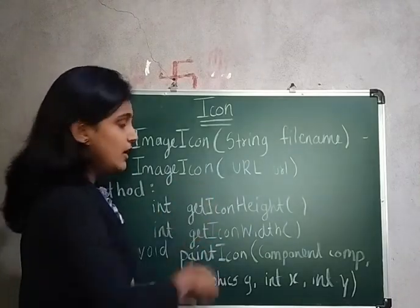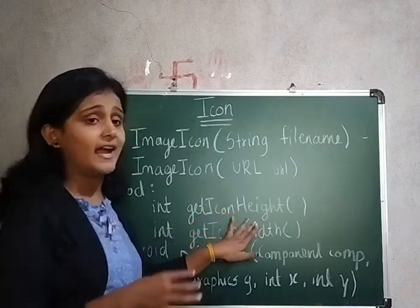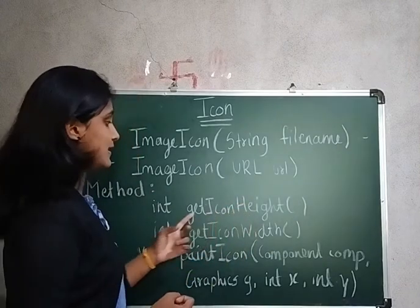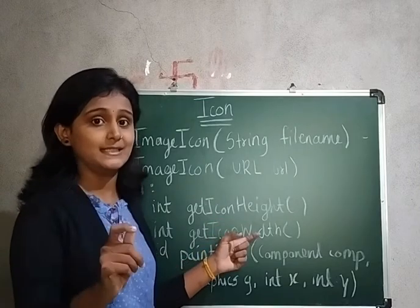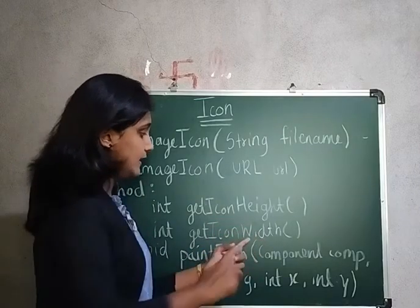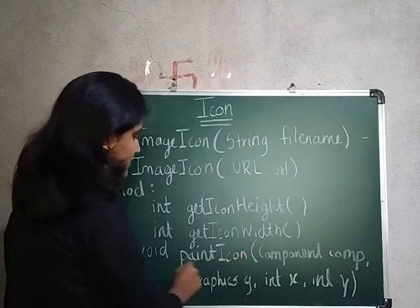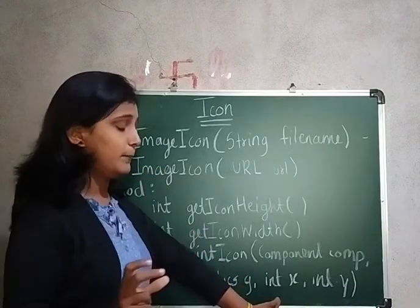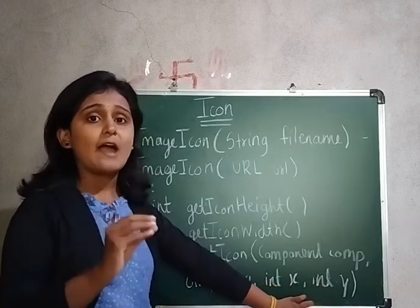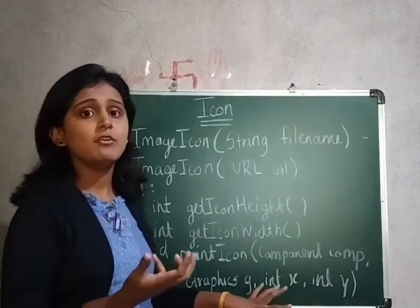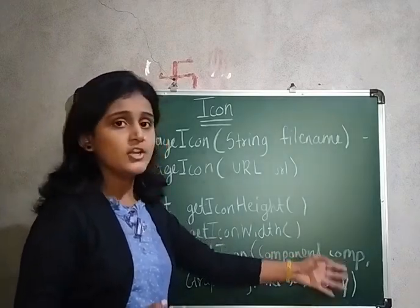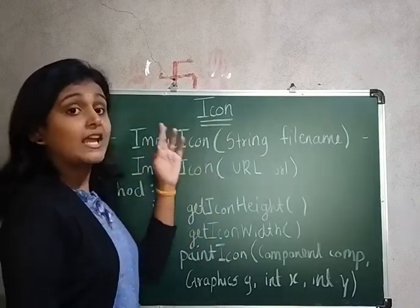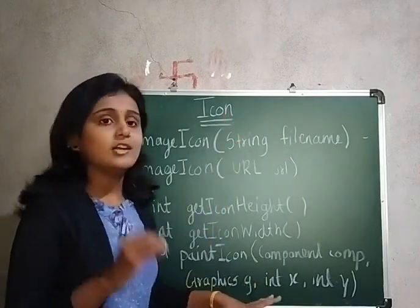Next are the methods of ImageIcon. The method getIconHeight returns the height of a particular icon in pixels. Similarly, getIconWidth returns the width of that particular icon. The next method is paintIcon, which contains four parameters: the icon you want to paint, x and y coordinates, the graphics context g, and an additional component parameter for paint information. This covers the constructors and methods of ImageIcon which implements the Icon interface.